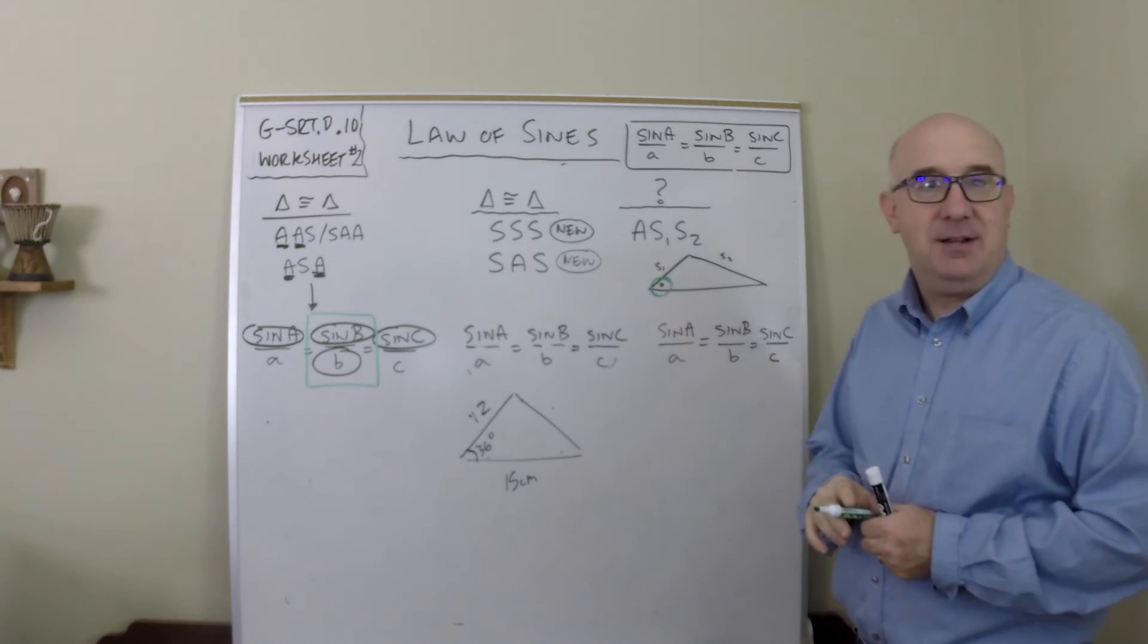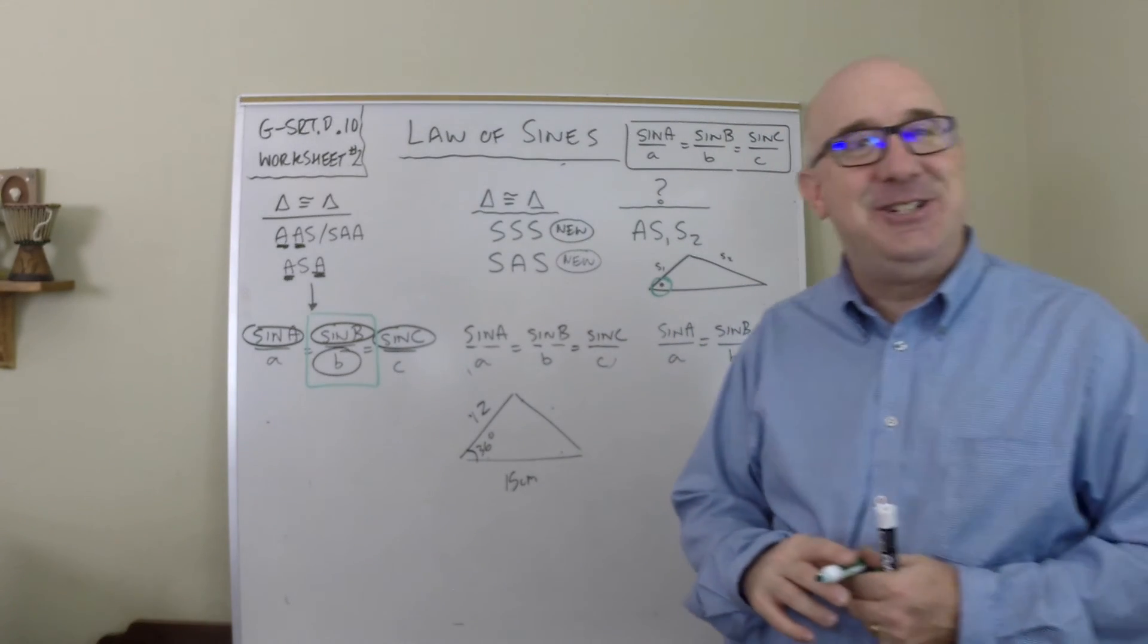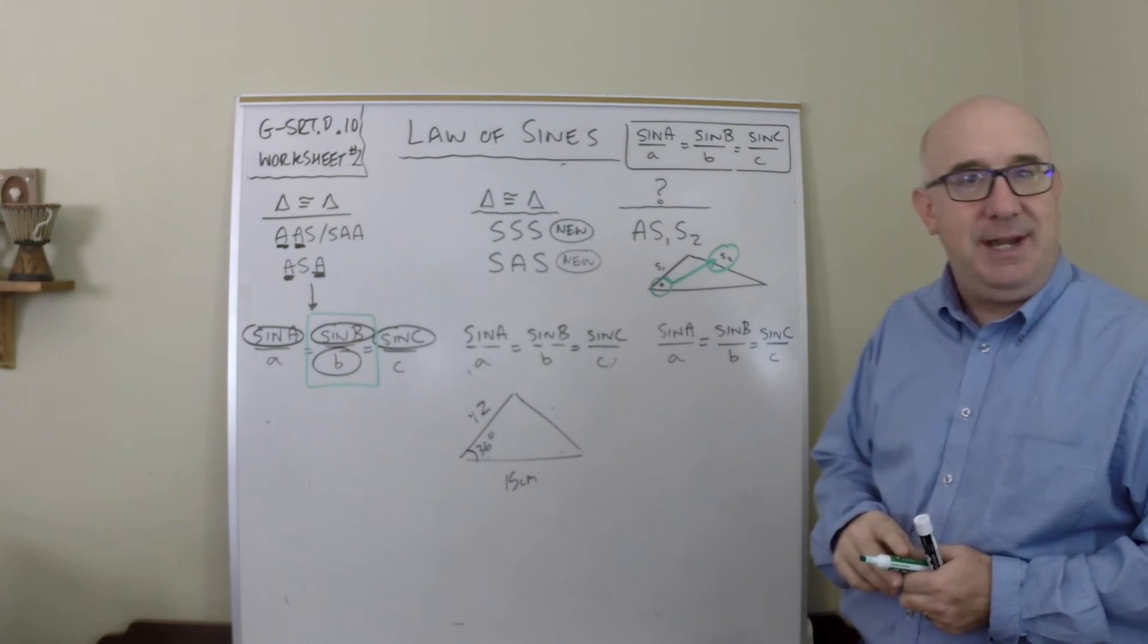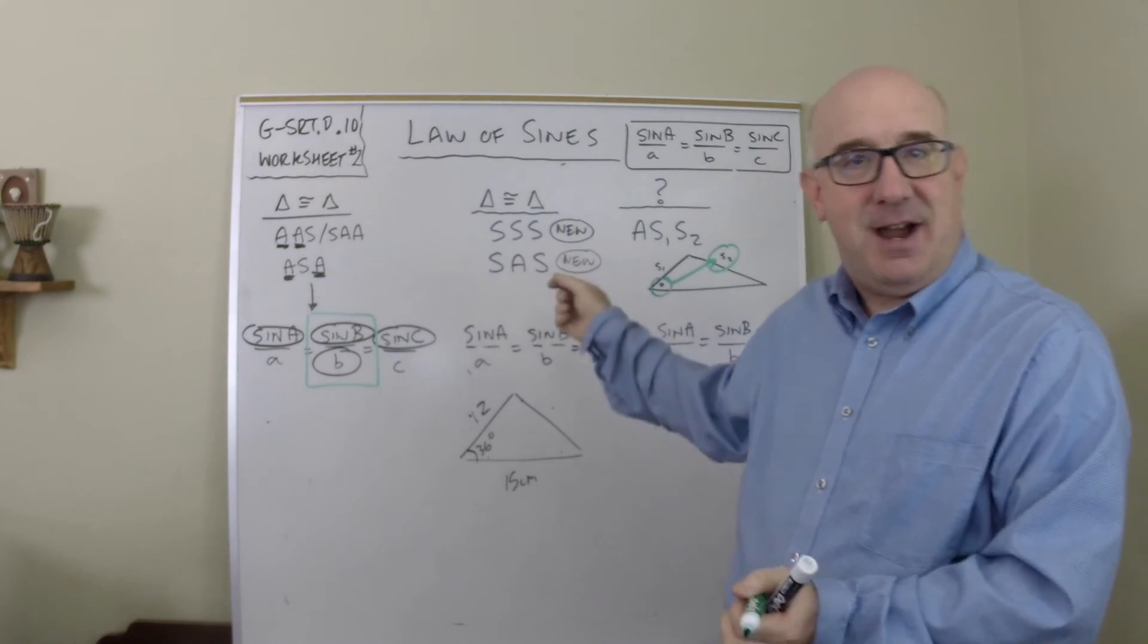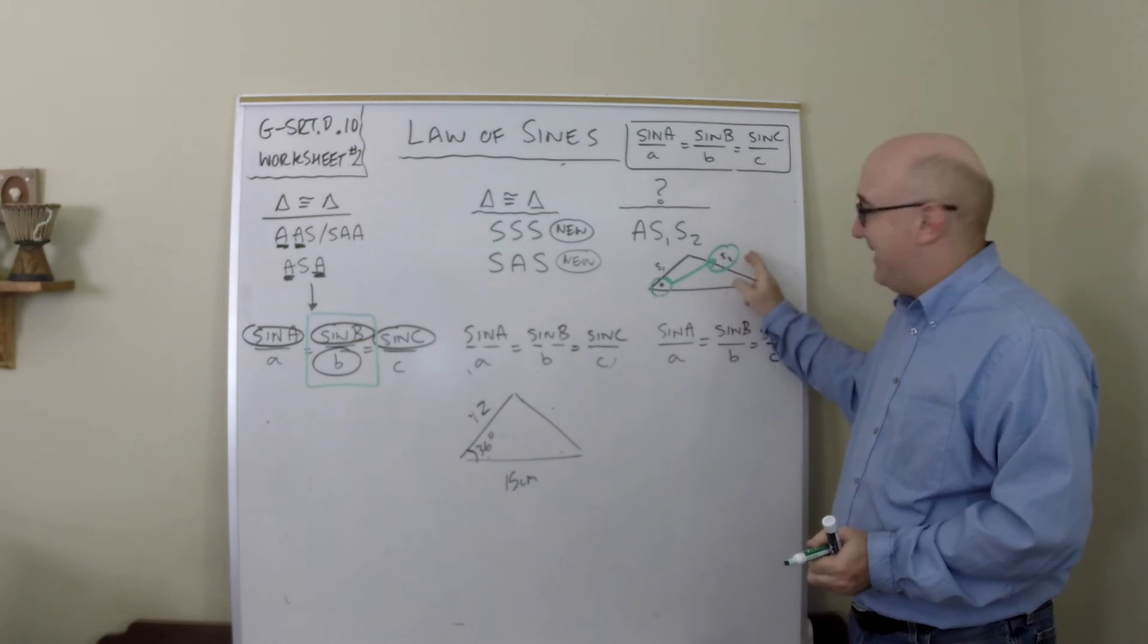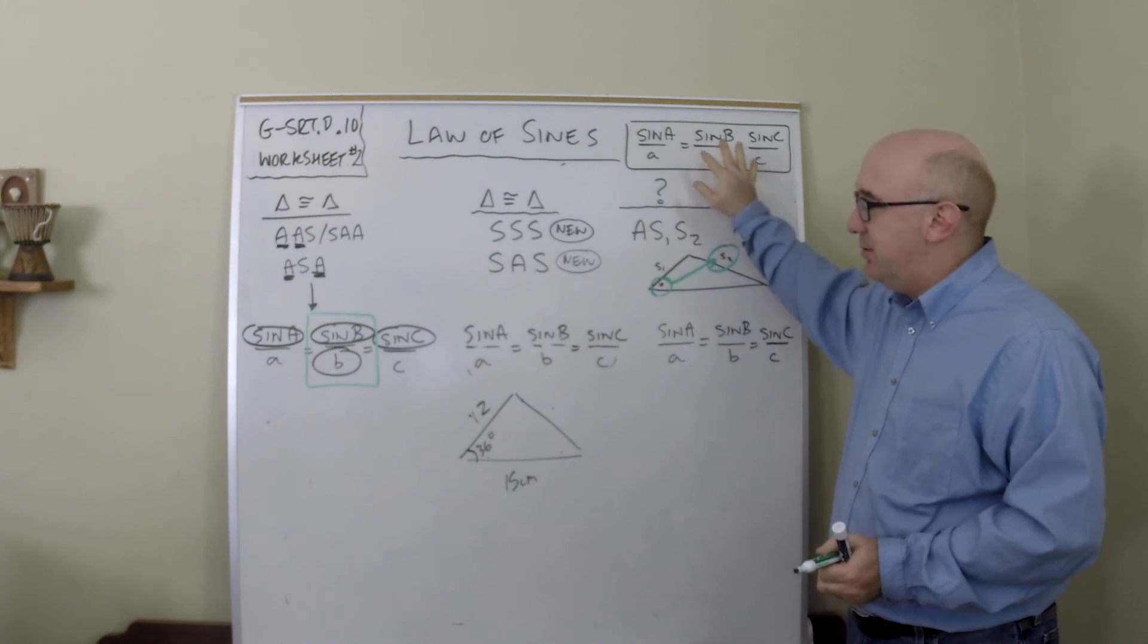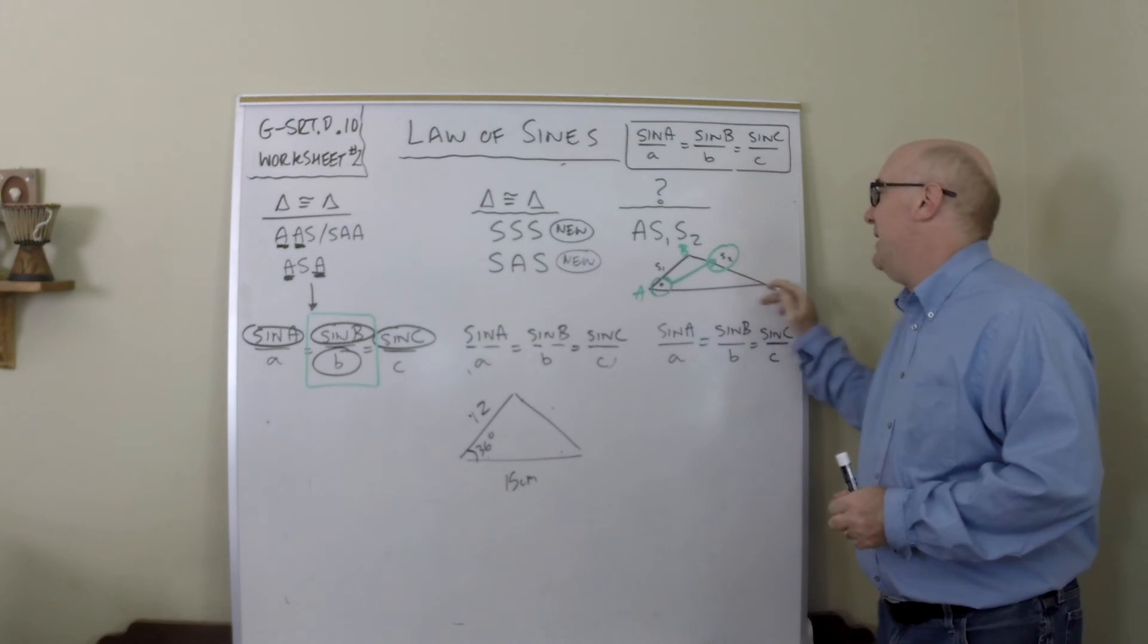Now this is a relationship that can be used in the Law of Sines. Take a look—that pairing will always take place between the angle and the second side, no matter what way you go. If you went angle-side one-side two, you'd still have that pairing. So this can be used in the Law of Sines. Let's say we call this A, B, and C.